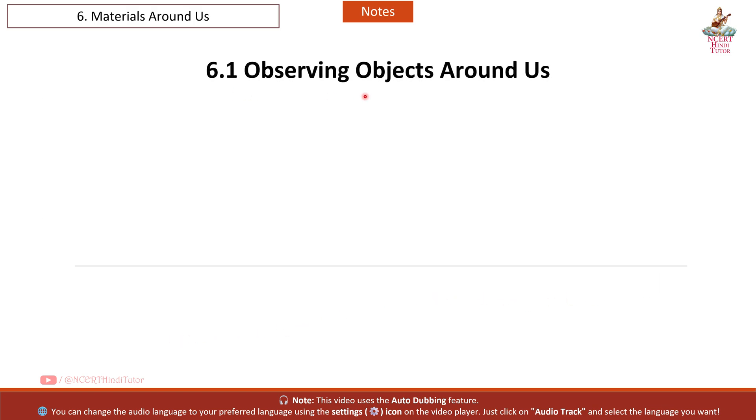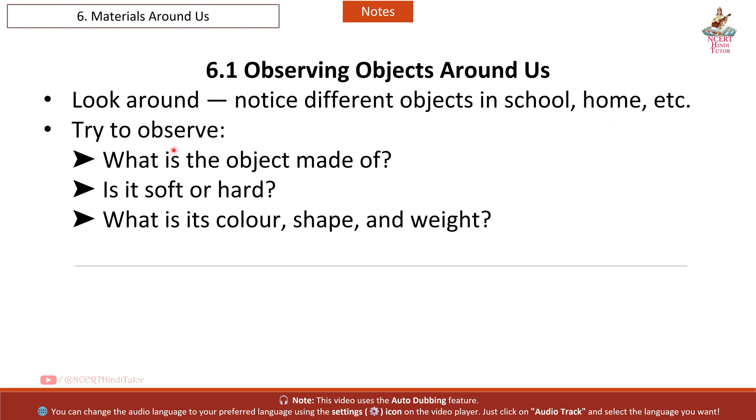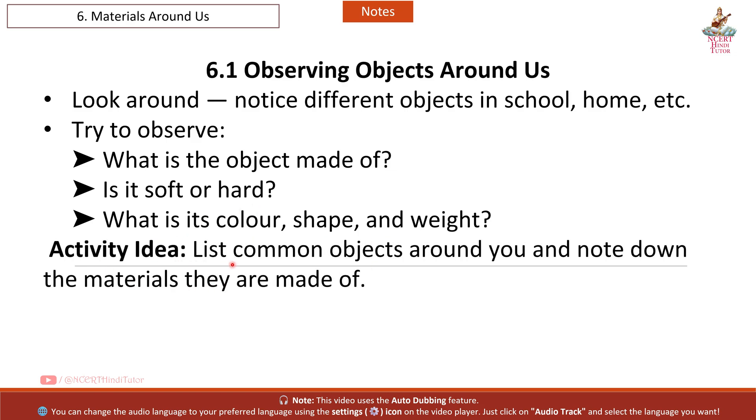6.1 Observing Objects Around Us. Look around, notice different objects in school, home, etc. Try to observe: what is the object made of? Is it soft or hard? What is its color, shape and weight? Activity idea: list common objects around you and note down the materials they are made of.